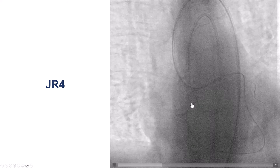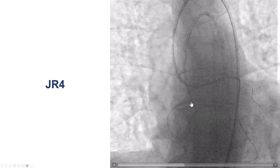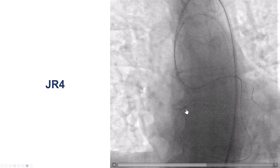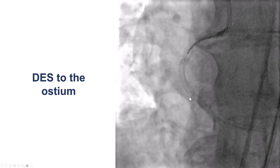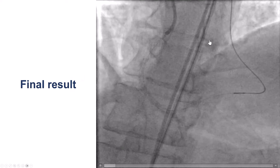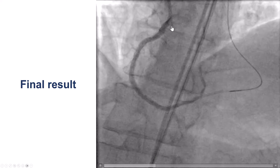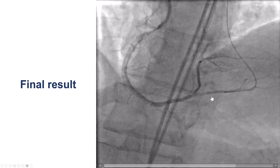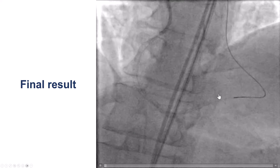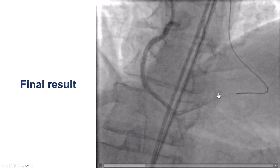After doing that, we were able to advance the JR4 guide all the way to the right coronary artery ostium and stent all the way from the distal to the ostial right coronary artery, with a nice final result and nice patency at the bifurcation.